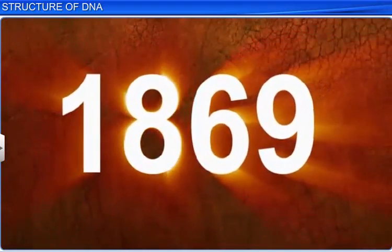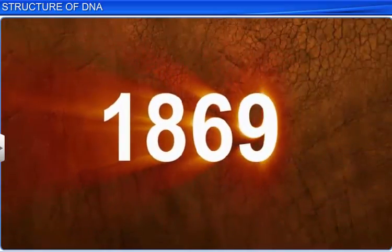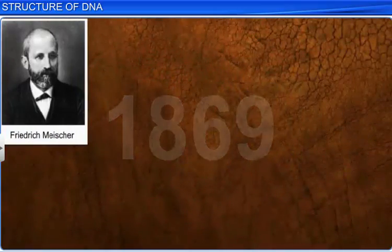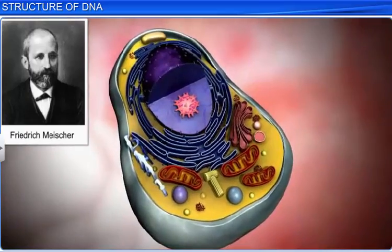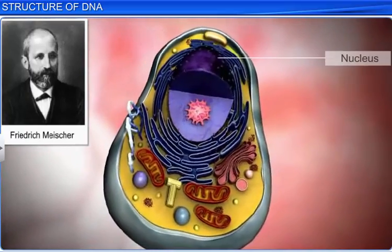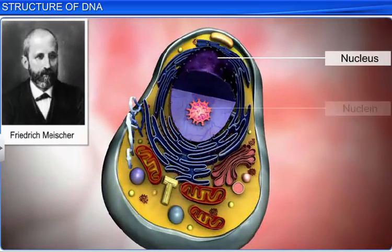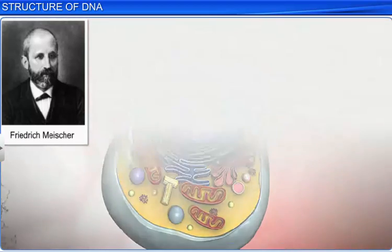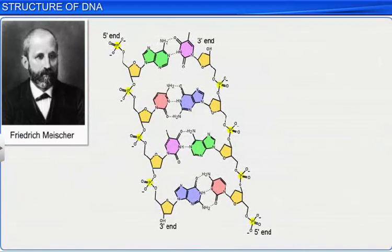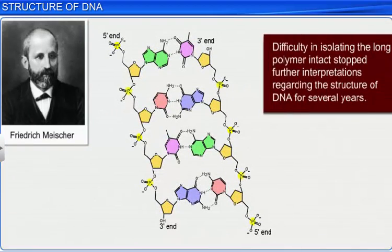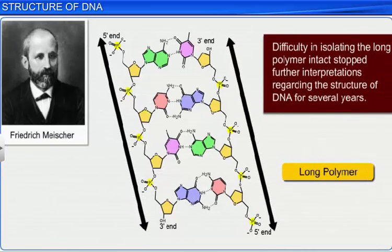It was in the year 1869 that Friedrich Miescher first identified DNA as an acidic material present in the nucleus and called it the nuclein. However, technical limitations made it very difficult to isolate such a long polymer intact, and therefore no further interpretations regarding the structure of DNA were made for several years.